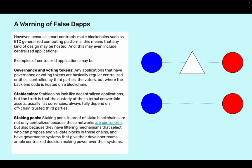A warning about false decentralization. Because smart contracts make blockchains such as ETC generalized computing platforms, this means that any kind of design may be hosted, and this may even include centralized applications. Examples of centralized applications may be governance and voting tokens. Any applications that have governance or voting tokens are basically regular centralized entities controlled by third parties, but where the backend code is hosted on a blockchain.